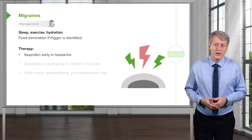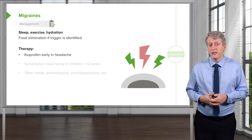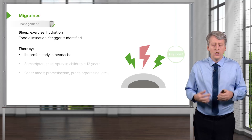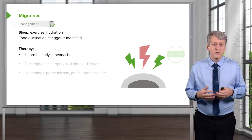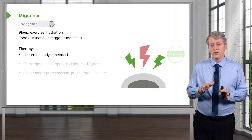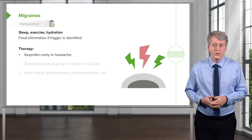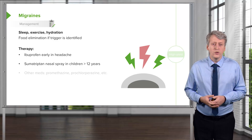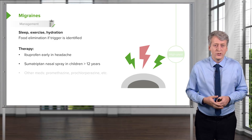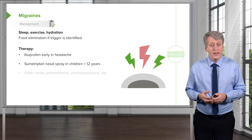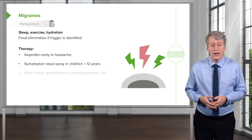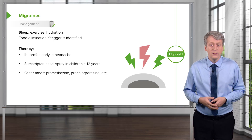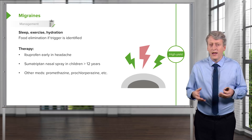Therapy is important for migraines because these headaches can be debilitating. Generally, we'll provide ibuprofen very early in the headache — earlier use of ibuprofen is important as it can stem and reduce the severity of the eventual headache. Patients can use sumatriptan nasal spray after 12 years of age. Other medications include promethazine and prochlorperazine, among others.